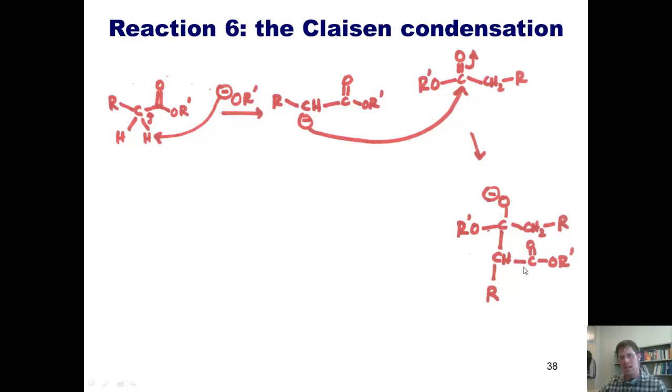So at this stage, what occurs is the negative charge on the oxygen comes down and kicks off that leaving group. Now that does not happen with an aldol reaction. The O- lingers until it gets protonated to form an OH. But because I have this leaving group for my ester starting material, the O- comes down, kicks off the leaving group to form this double bond. This is my final Claisen condensation product.